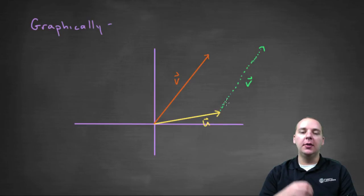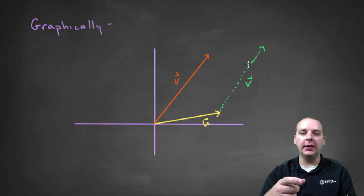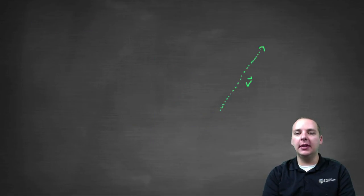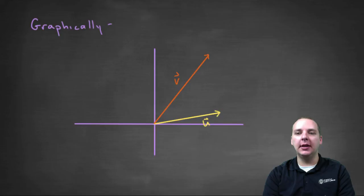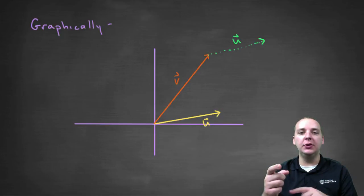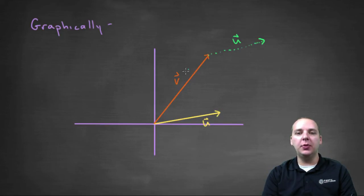So you would draw v picking up where u left off. So u plus v, or another way to say it would be v plus u. And notice no matter which way you do it, you end up at the same place. So here let me hide this, and look, notice you end up at the same place.